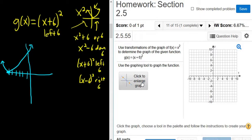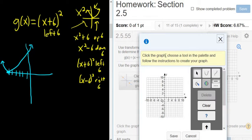So I'm going to come over here. It says click to enlarge the graph. And then click the graph, choose the tool, and the palette. So we're going to click the u, because we know it's a u shape. So x squared tool, it even tells you.